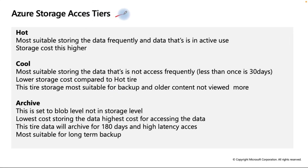There are three access tiers in Azure Storage: Hot, Cool, and Archive. Hot is most suitable for storing data that is frequently and actively accessed; storage cost is higher. This tier is ideal for websites where clients need to frequently access data.